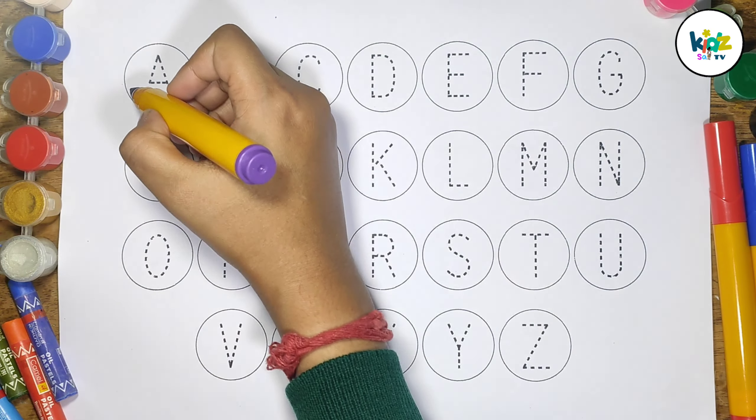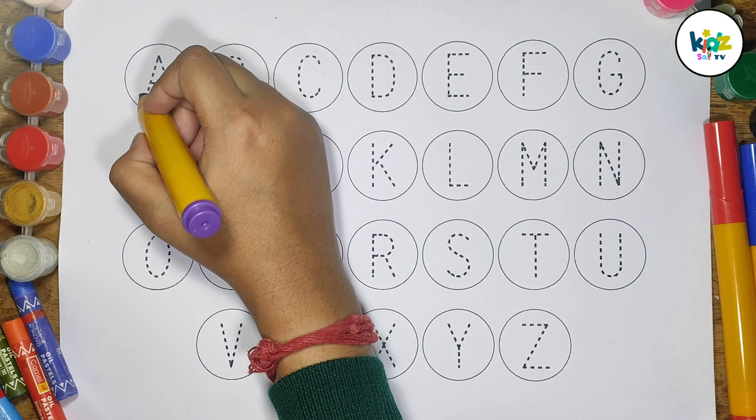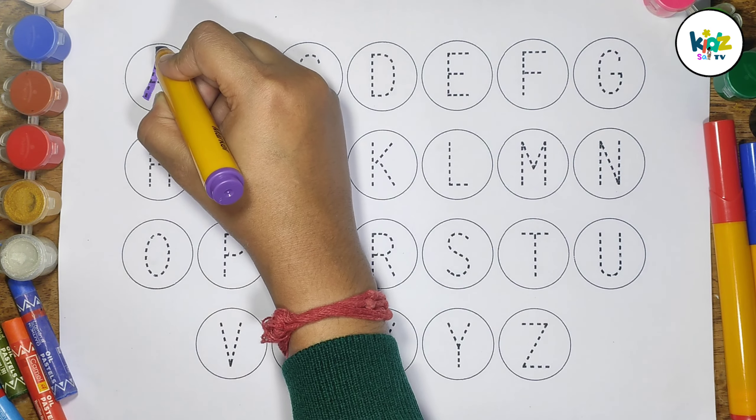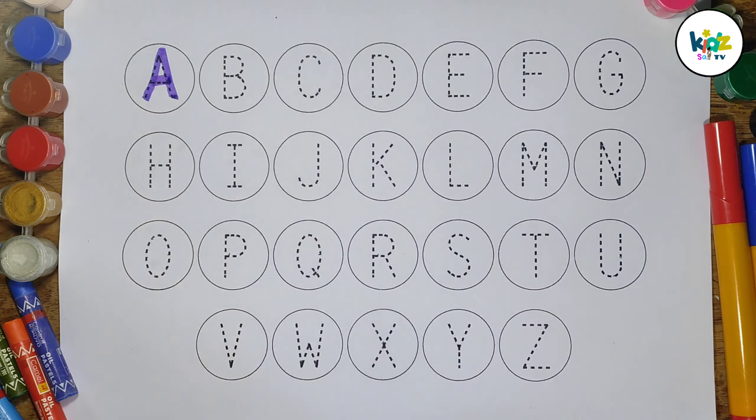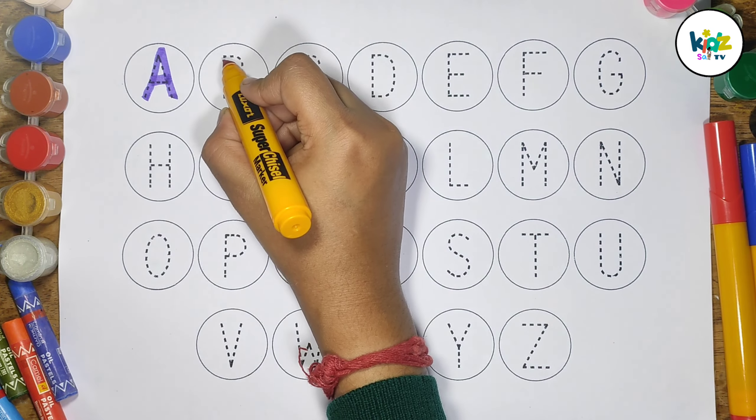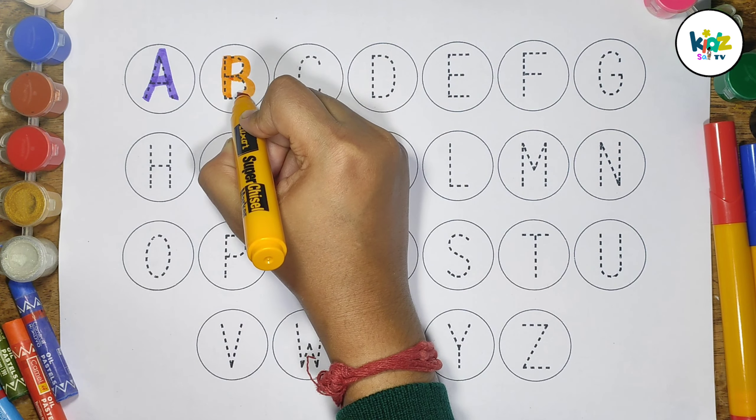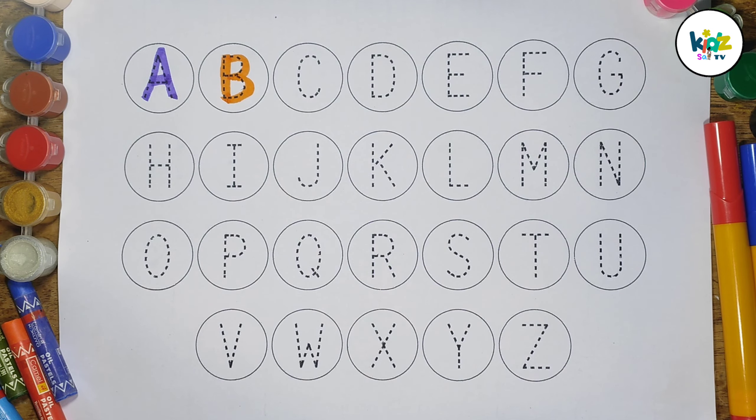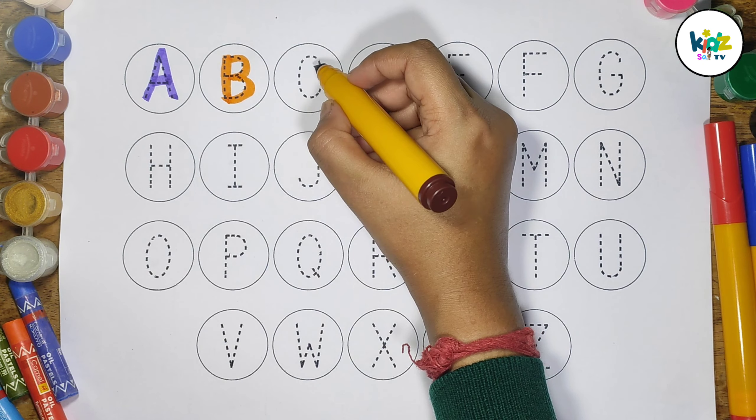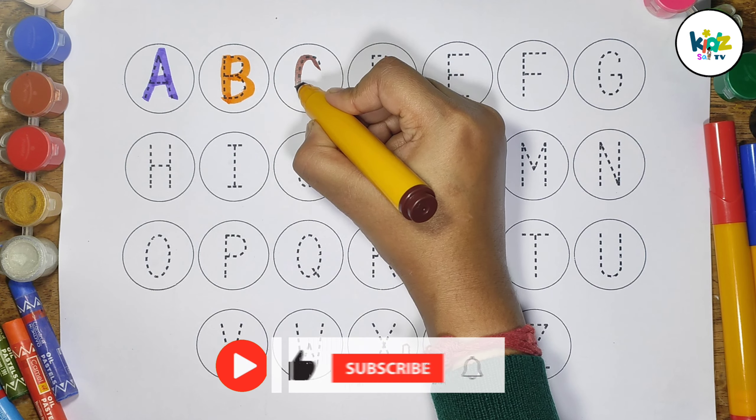Let's get started. A A for Apple. B B for Ball. C C for Cat.